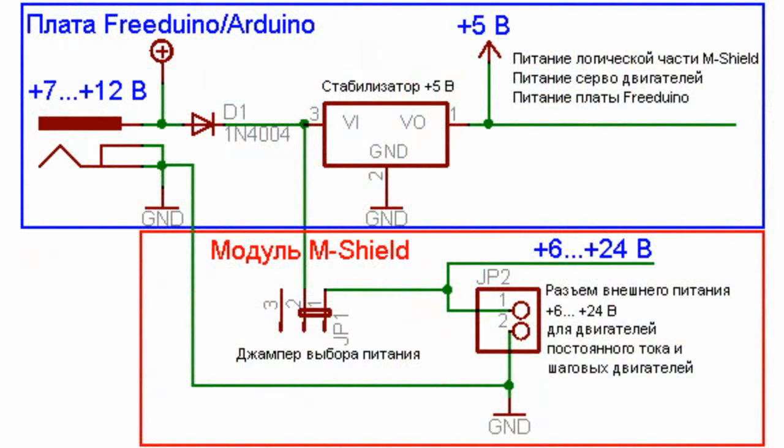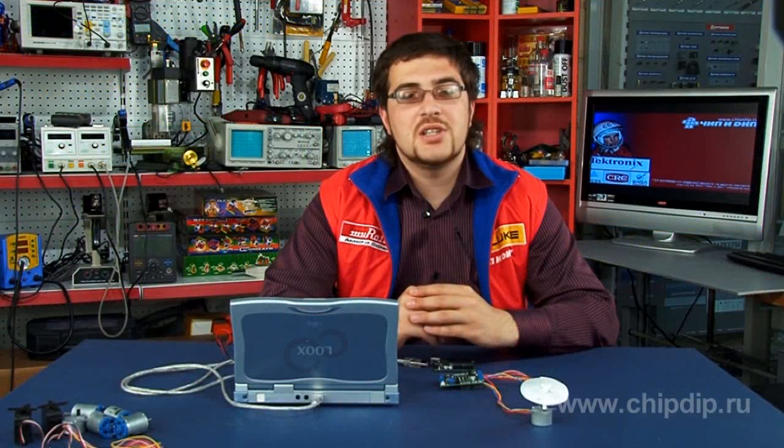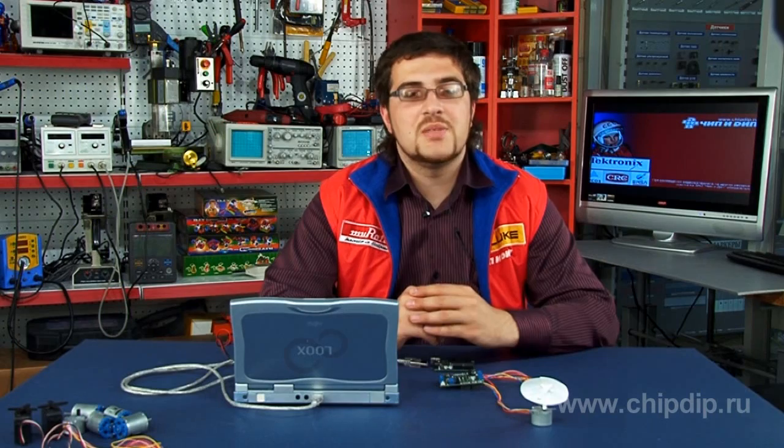The MotorShield electric circuit has two independent supply voltage circuits: low current and power. One should use the power circuit to power stepped motors.